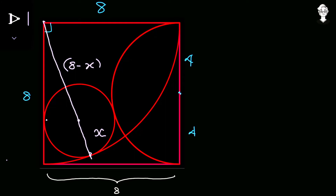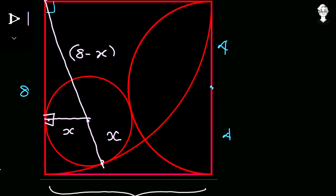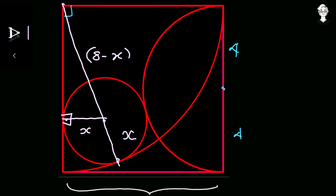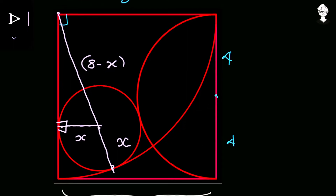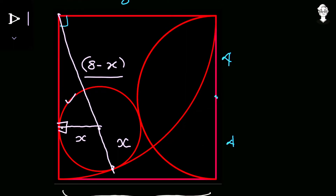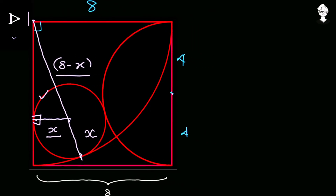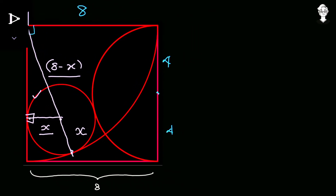The second point of tangency is where the complete circle touches the side of the square. Since the side is a straight line tangent to the circle, the radius drawn to that point is perpendicular to the side, and that radius equals X. This gives us a right triangle with hypotenuse 8 minus X and base X, so let the remaining side be Y.